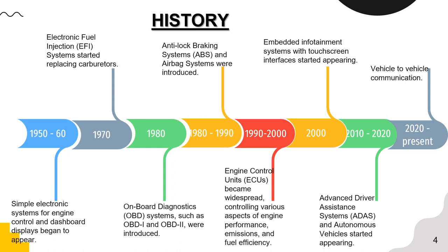Between 1990 and 2000, Engine Control Units became widespread, controlling various aspects of engine performance, emissions, and fuel efficiency. By the end of 2000, embedded infotainment systems with touchscreen interfaces started appearing. Between 2010 and 2028, Advanced Driver Assistance Systems and autonomous vehicles started appearing, with examples including adaptive cruise control. Currently, research is ongoing on the topic of vehicle-to-vehicle communication.